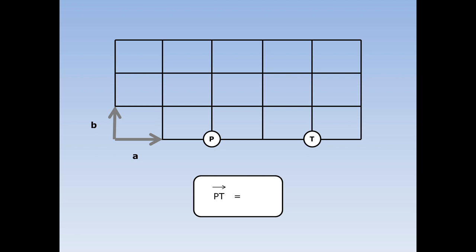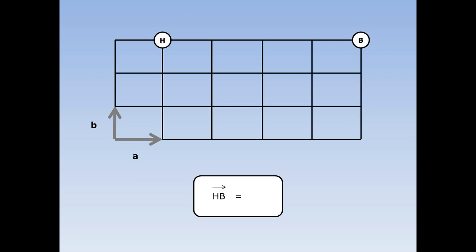How do I get from the park to the tube station? This is a journey of two A roads. How do I get from the railway station to the doctors? This is a journey of three A roads. How do I get from the hospital to the bakers? This is a journey of two B roads.